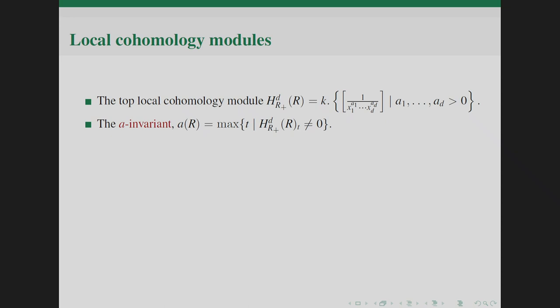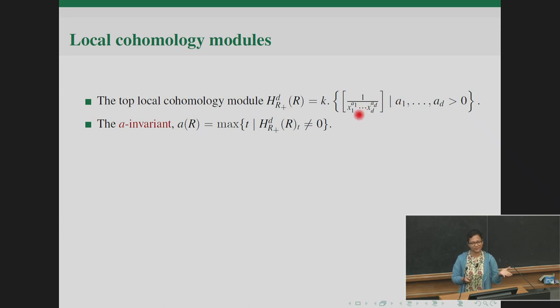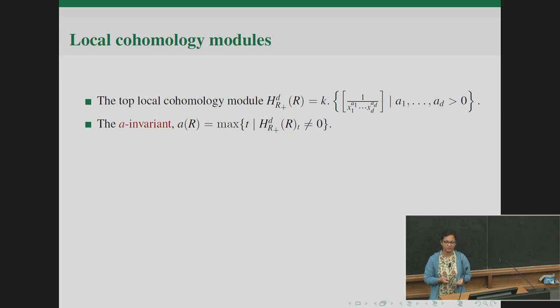Our project was to look at a few more properties, and we concentrated on local cohomology modules because these modules themselves preserve many more properties of rings. To give a quick overview: the main target is the topmost local cohomology module H^d_m(R). The support is the irrelevant ideal or maximal homogeneous ideal, and this module can be seen as spanned by fractions of the form 1/(x_1^{a_1}···x_d^{a_d}) where all powers are positive.